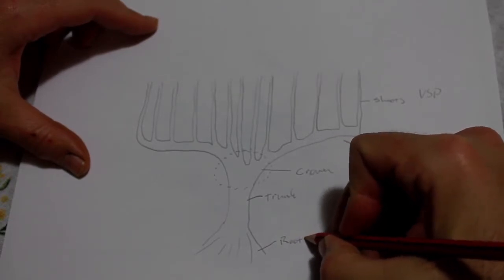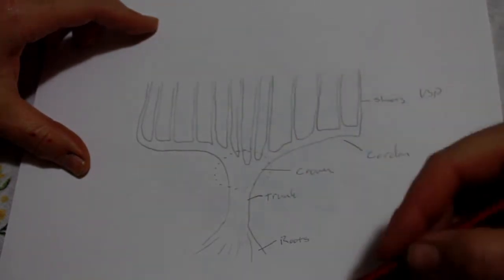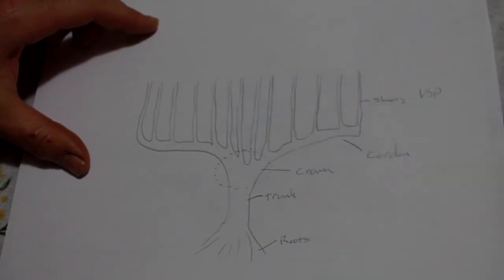And there will be as many roots in the ground as there are shoots in the air. So the grapevine is basically a mirror image of itself under the ground, only of course not trained like we do up here.